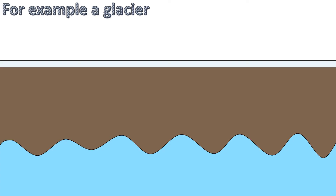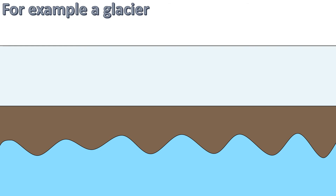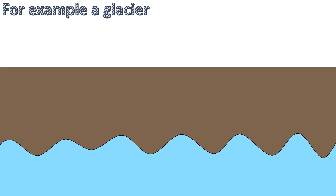One cause of land movement is compression or decompression of land. This can be caused by glaciers. When glaciers form, their weight pushes down on the land, causing it to move down. However, when the ice melts, the land no longer has that pressure pushing down on it, so the land rebounds and rises.